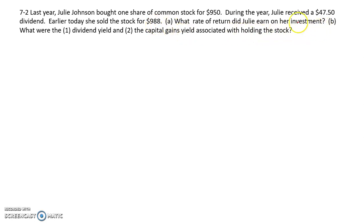That's part A, and we'll worry about part B in a minute. So $950 is the beginning price, we'll use P0. Then P1 for the ending price, $988, and then our dividend is $47.50.